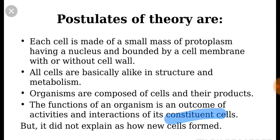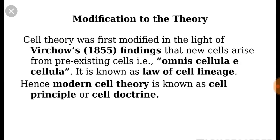This theory had an exception — how do new cells arise? This was sorted out by another scientist in 1855, named Rudolph Virchow, who stated that cells arise from pre-existing cells, expressed as 'Omnis cellula e cellula.' He gave the law of cell lineage and gave the final shape to the cell theory. The modern cell theory is known as cell principle or cell doctrine.